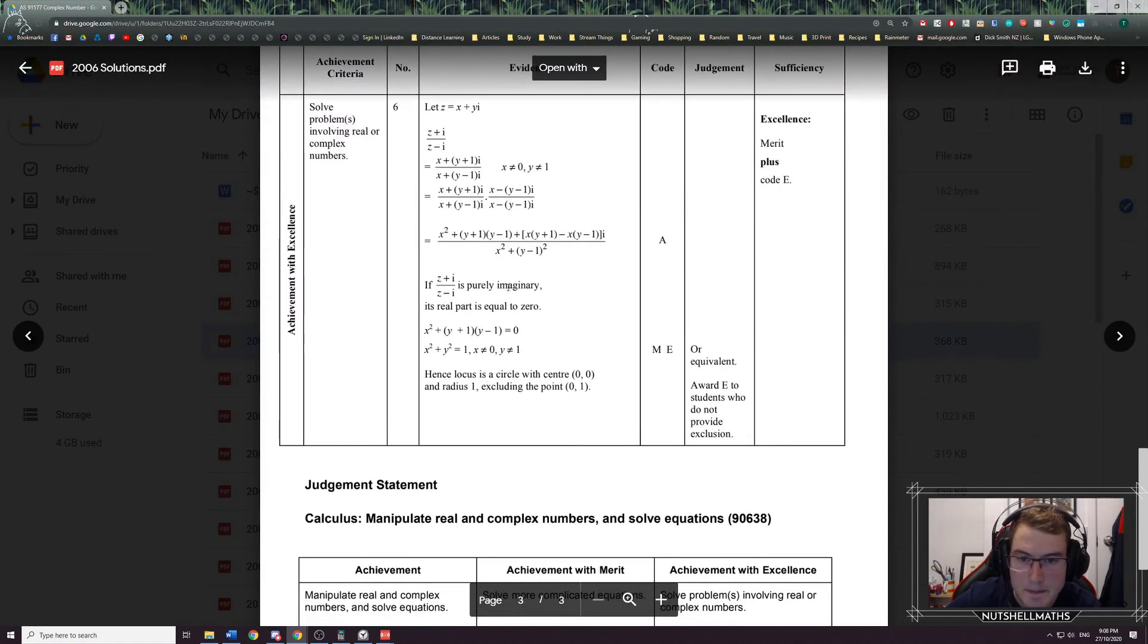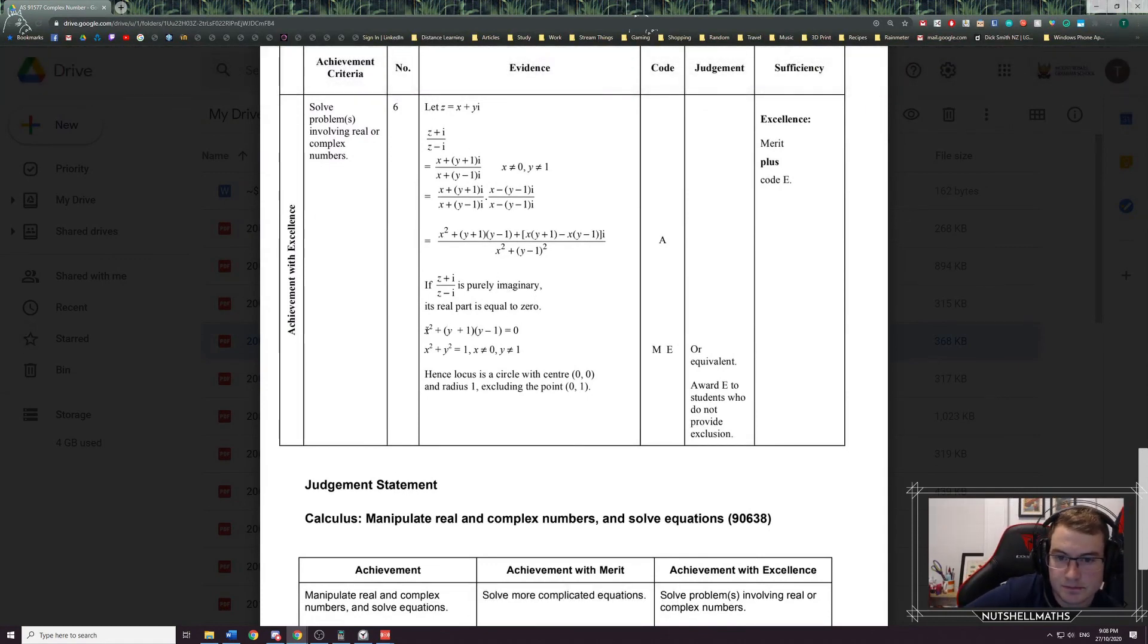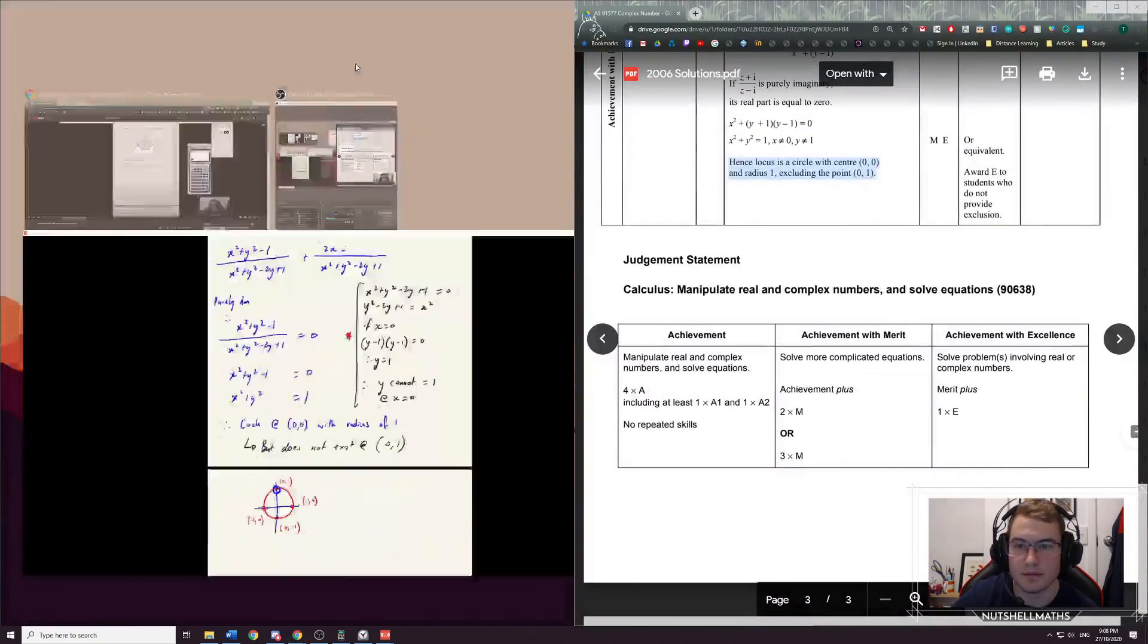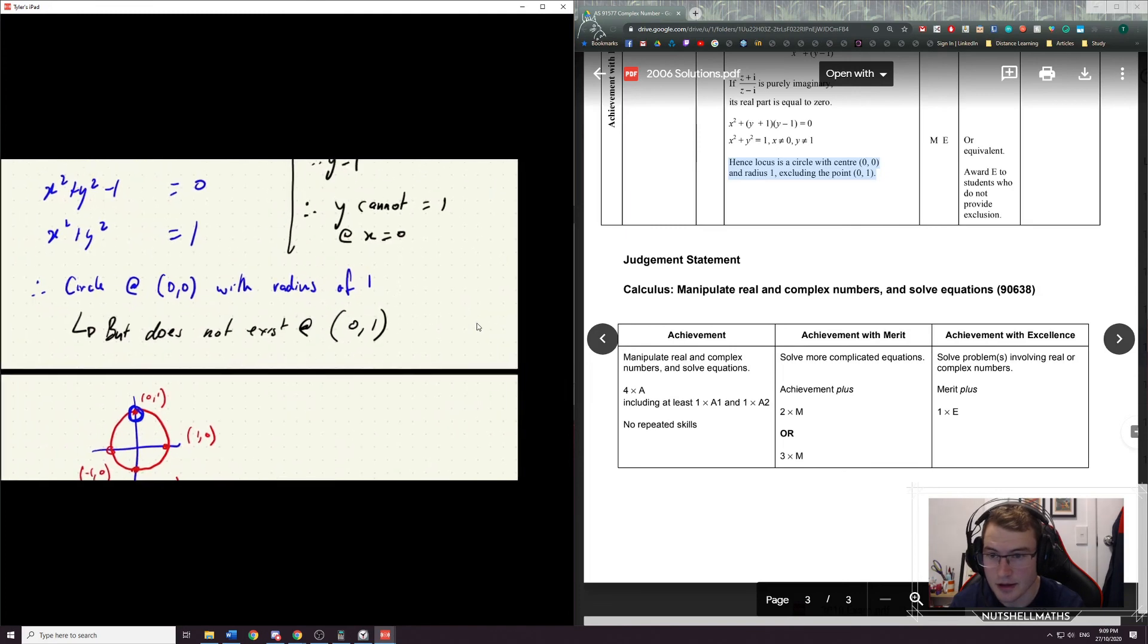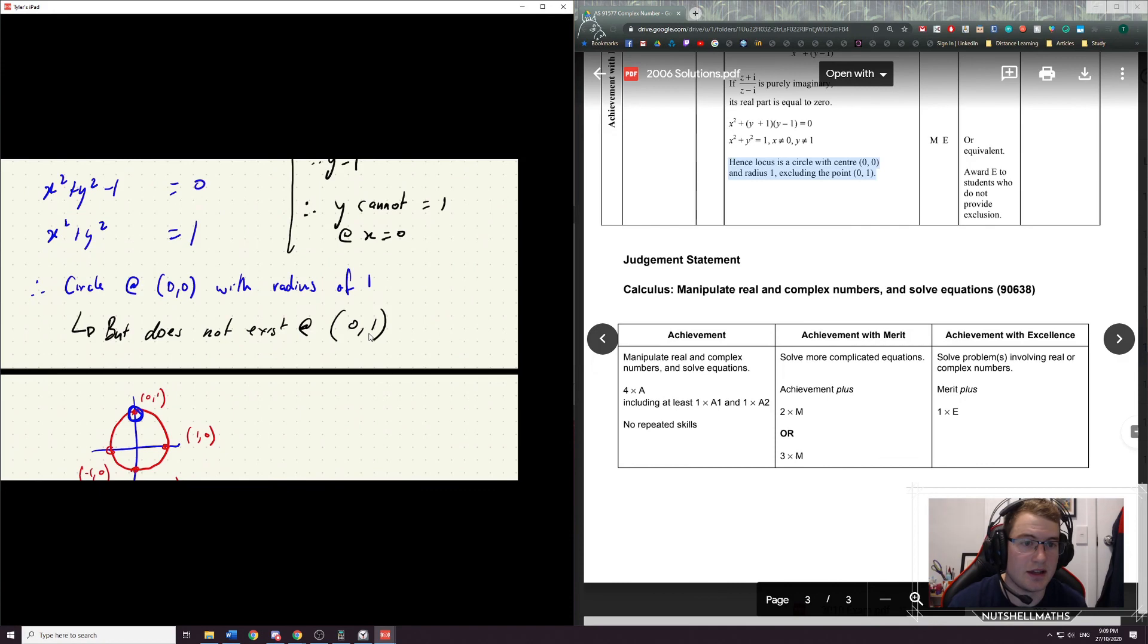Right. Here's the answers here. We've got. Oh. Oh no. That's okay. Locus is a circle. Center zero zero. And radius of one. Oh look. We have almost textbook answered this. I'm happy with that. Look. Hence. Locus is a circle with center zero zero. And radius one. Excluding the point zero one. Let's look at our working here. I know that's kind of hard to see. There you go. Circle at zero zero with radius of one. But does not exist at zero one.